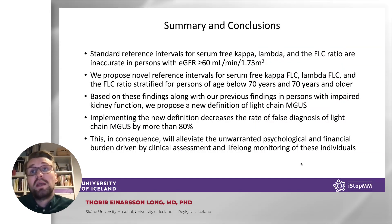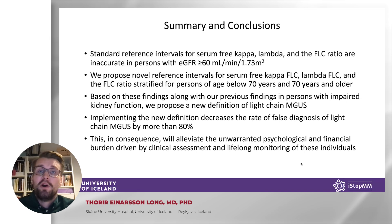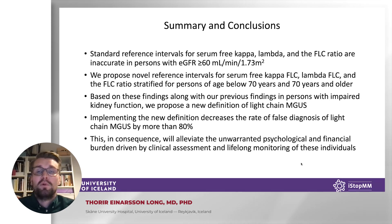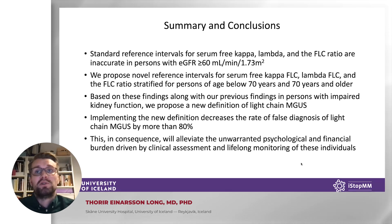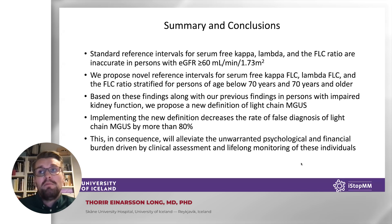To summarize, using data from the largest population screening study of monoclonal gammopathies to date, we have demonstrated that among persons with preserved kidney function, the standard reference intervals for kappa FLC, lambda, and the FLC ratio are inaccurate. This causes high rates of false positive kappa and false negative lambda monoclonal gammopathies. We propose novel reference intervals for serum-free kappa, lambda, and the FLC ratio stratified by age below 70 years and 70 years and older. Based on these findings along with our previous findings in persons with impaired kidney function, we propose a new definition of light chain MGUS. Implementing the new definition decreases the rate of false diagnosis of light chain MGUS by more than 83%.